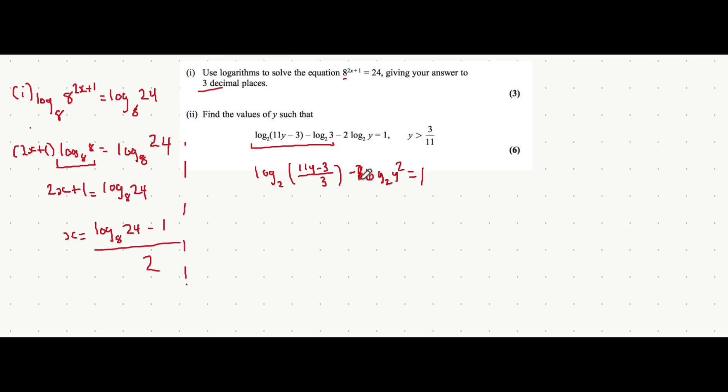Now that these are both log base 2 terms, we can divide the insides of the logarithms. So we can say log base 2 of 11y minus 3 over 3, all divided by y squared. Let's write that out here. So when you divide by y squared, that's essentially the same as multiplying by 1 over y squared. So it just becomes 11y minus 3 times 1, which is 11y minus 3 for the numerator. All divided by 3 times y squared, which is 3y squared. And all of that is equal to 1.